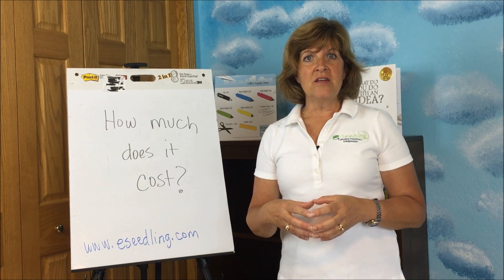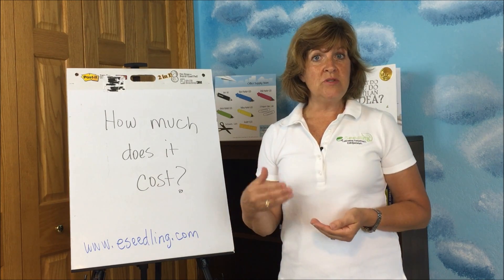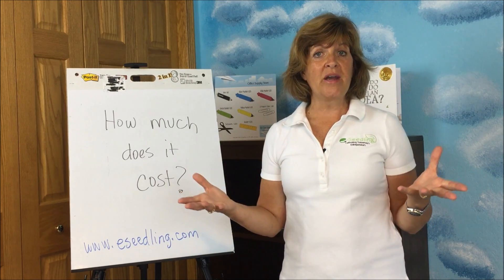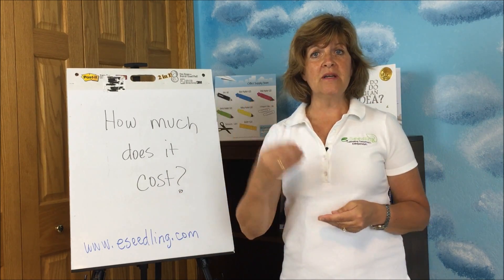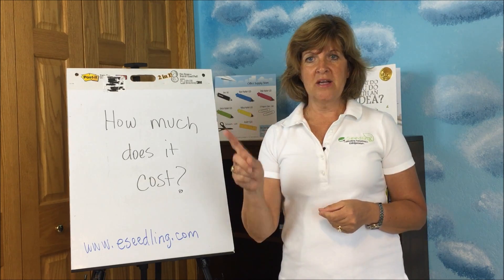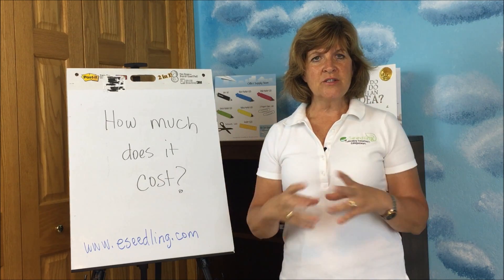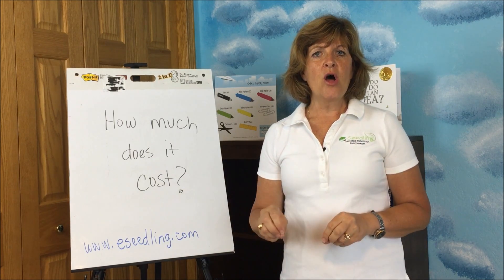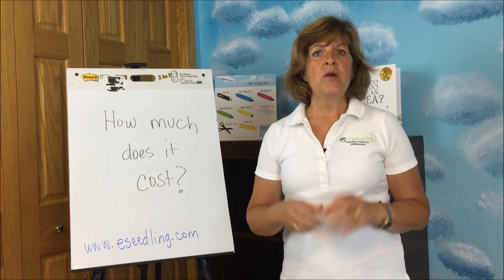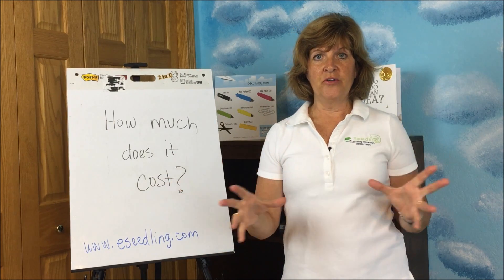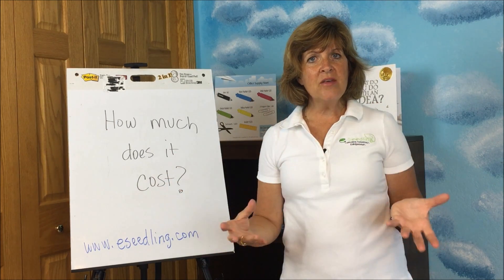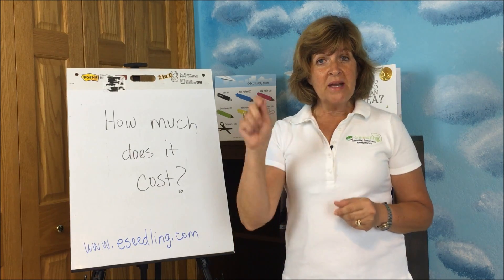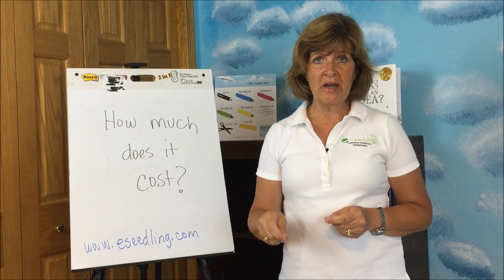The second thing you need to think about is what do you need to make your product or service? If you're making a product — let's say you're making jewelry — how much does it cost to make a bracelet? What kind of things do you need to buy to make those bracelets? Those are called raw materials. When you sell those things, they're called cost of goods sold. But when you buy them to make something, they're called raw materials. You need to make a list of what goes into the product.